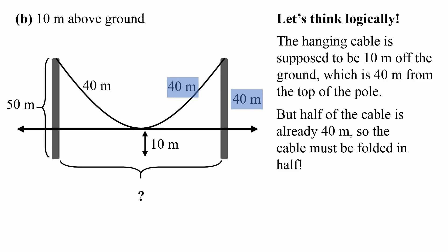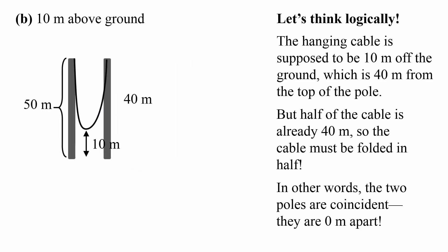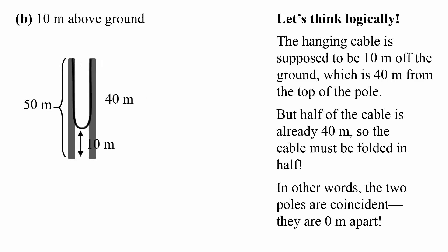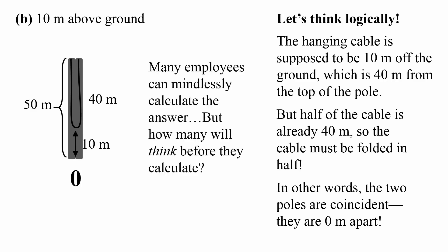We need to think about this problem logically. The hanging cable is supposed to be 10 meters off the ground, which is 40 meters from the top of the pole — but half of the cable is already 40 meters. In other words, the cable must be folded exactly in half, meaning the two poles are coincident: they are 0 meters apart. The diagram actually shows the cable going directly down from the two poles because they are at exactly the same spot. No equations required.